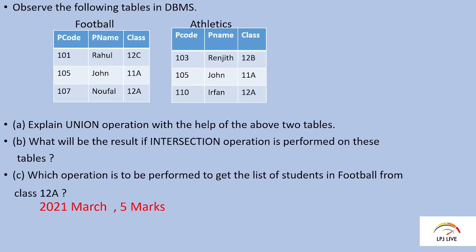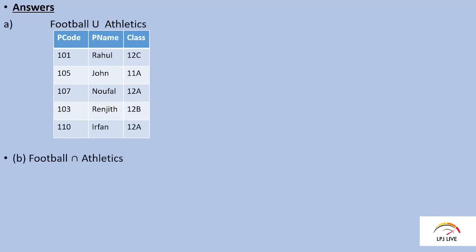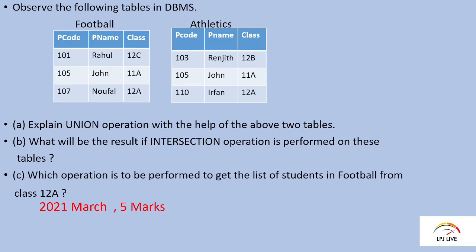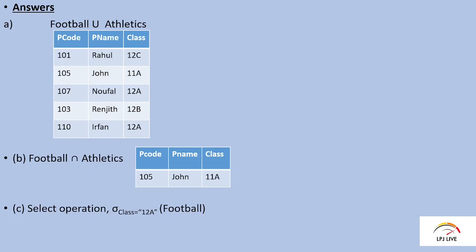The second question is intersection operation. Football intersection Athletics gives us only the rows common to both tables. The third question asks for class 12A from the Football table, using the select operation: select class equals to 12A from Football.